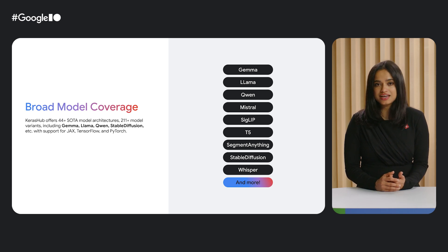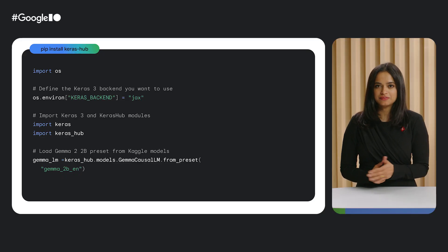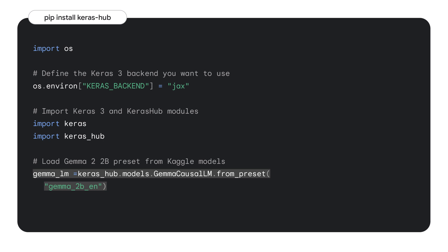Whether you're working with text, images, or multi-modal data, you'll likely find a model in Keras Hub to get you started. Here's a simple example demonstrating how to load a pre-trained Gemma model directly from Keras Hub. First, you'll need to install Keras Hub using pip install keras-hub. Then, let's set the backend to JAX. Next, we import Keras 3 and Keras Hub. Finally, we load a pre-trained language model called Gemma 2B, specifically its causal language task model directly from preset. We will learn more about presets later.